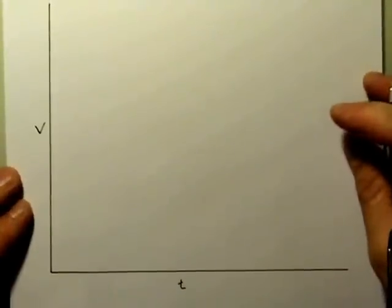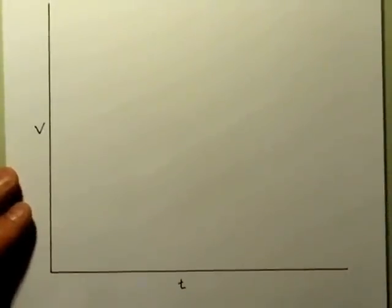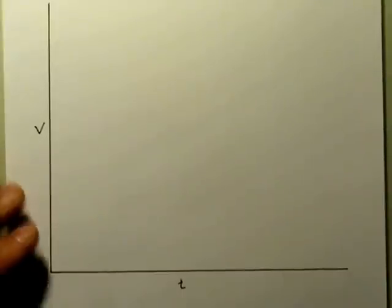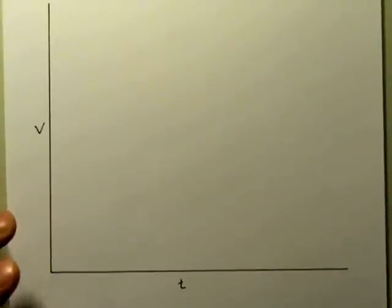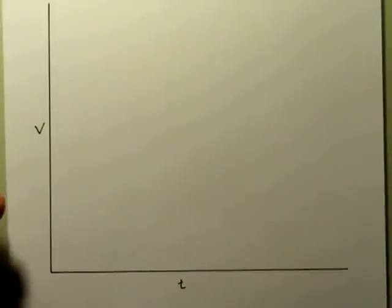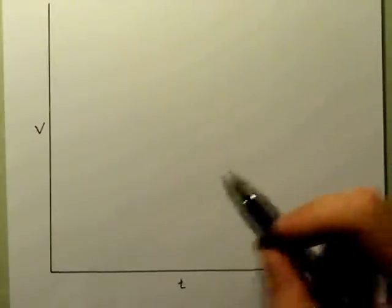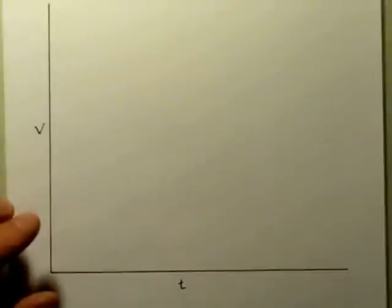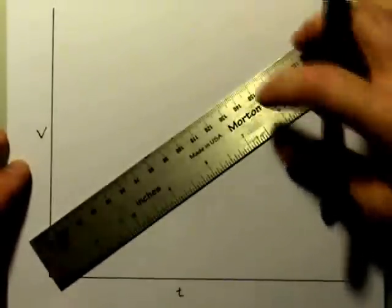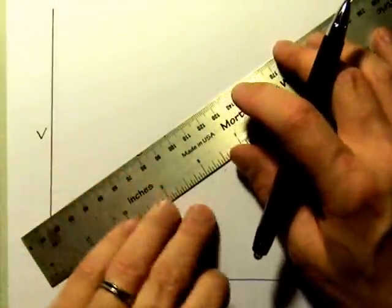We have our VT graph — the velocity-time graph. Under accelerated motion, we are specifically looking at uniformly accelerated motion. Uniformly accelerated motion means that in any given time interval — whether 1 second or 10 seconds — the velocity of the vehicle will always change by the same amount. If I look at 1-second intervals, the increase in velocity will be the same all the time. As a result, when we graph this, the shape will be a straight line.